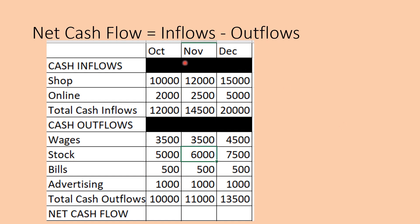We now calculate the net cash flow — that's taking all the inflows and subtracting the outflows to see how much money they have left each month. In October: £12,000 inflows minus £10,000 outflows gives a net cash flow of £2,000. In November: £14,500 minus £11,000 leaves £3,500. In December: £20,000 minus £13,500 gives a net cash flow of £6,500. So net cash flow is inflows minus outflows.